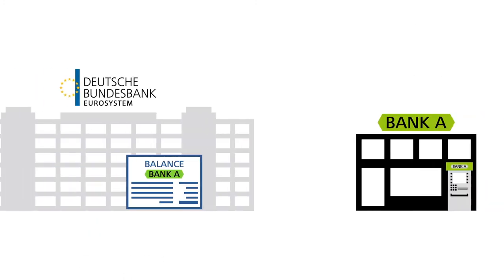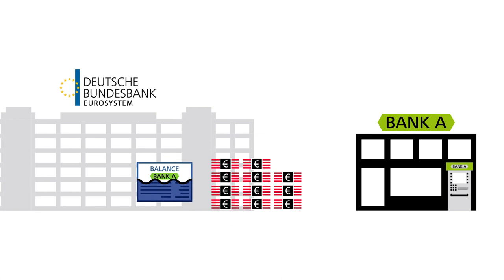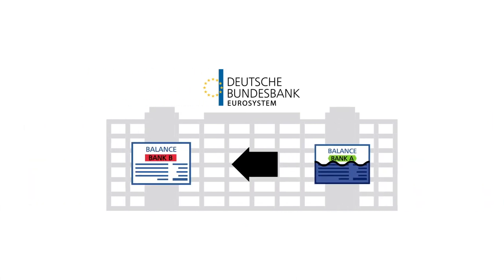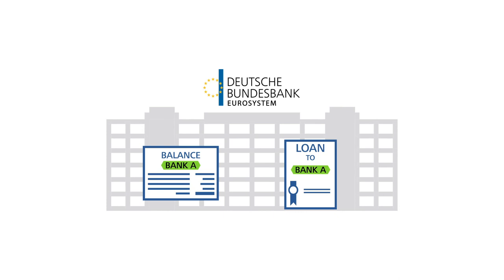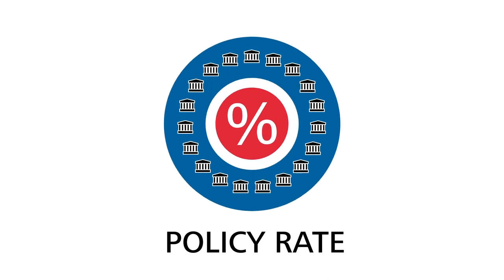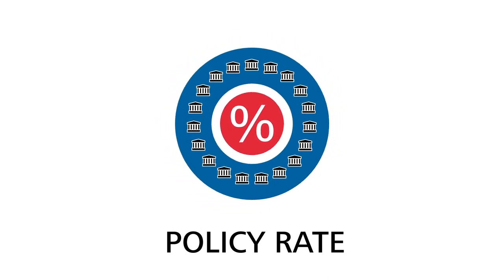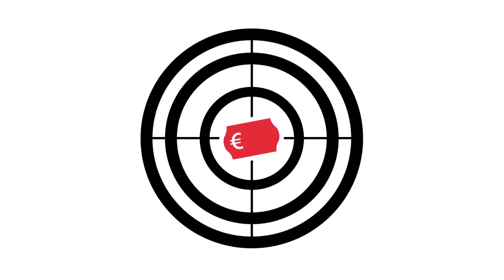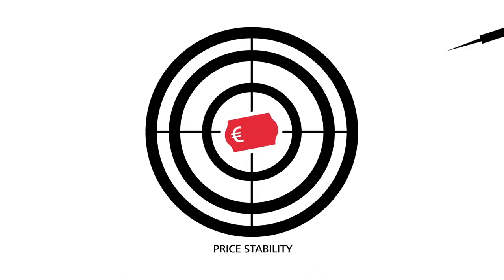Central bank money therefore has an important role to play. The commercial banks are in constant need of central bank money to meet their minimum reserve requirements, to be able to withdraw cash, and to settle cashless payment transactions. They obtain this central bank money in part by taking out loans from the central bank. Hence, raising and lowering the interest rate on central bank money serves as an important tool for achieving the Eurosystem's primary objective — price stability.